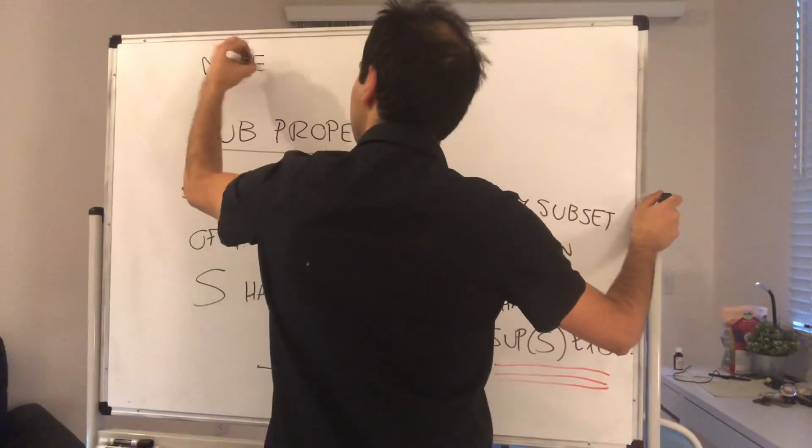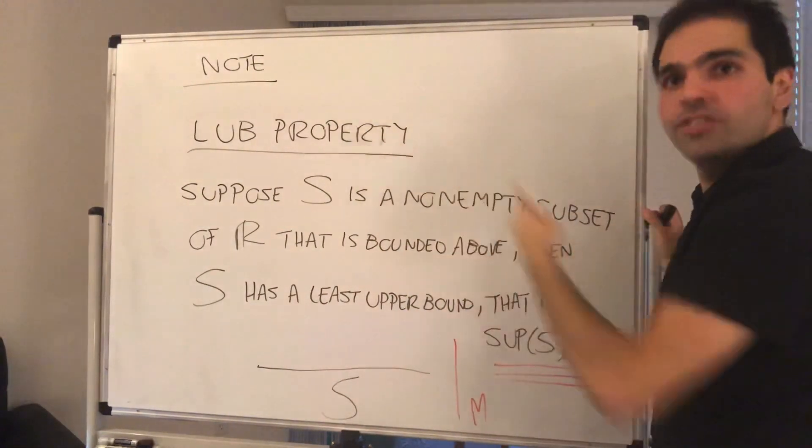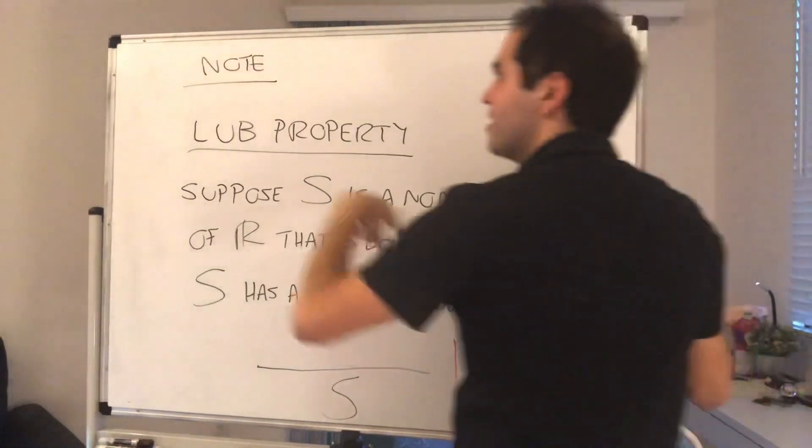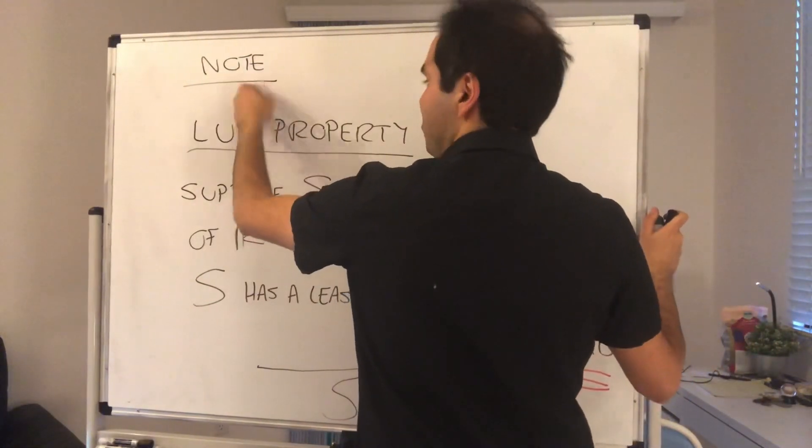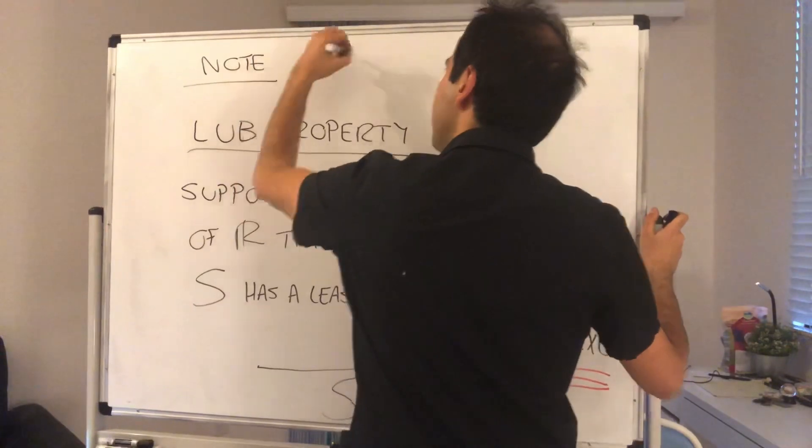So note, the real numbers have that property. We can actually show this, maybe we'll do this at some point, but the real numbers have that property. So, in other words, R is complete.